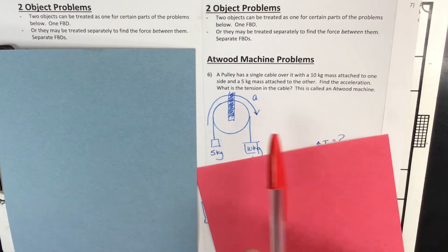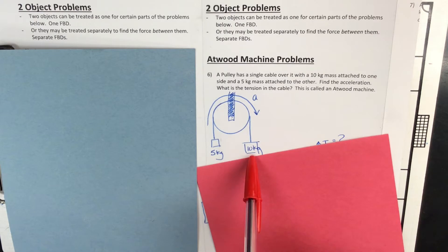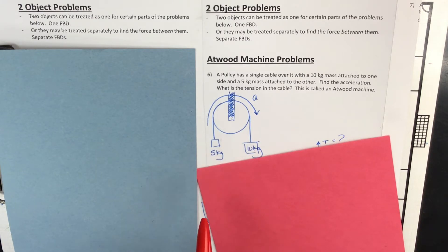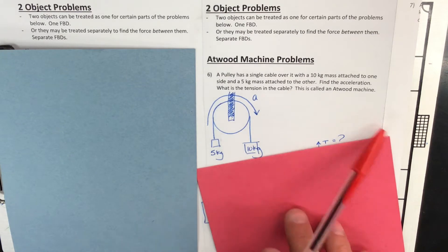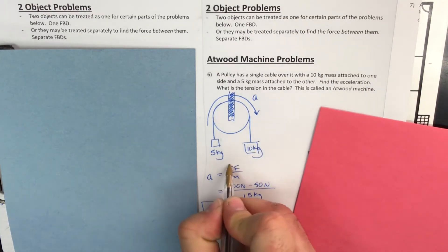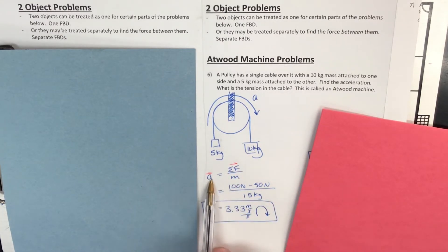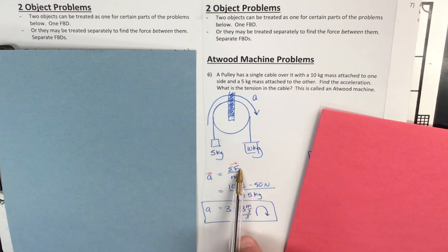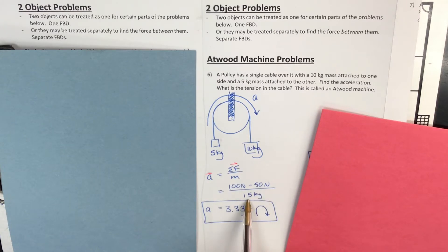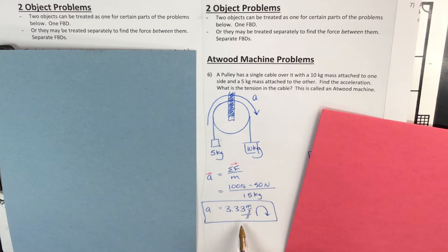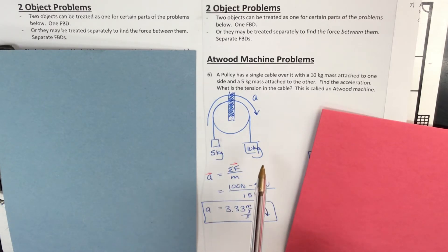We're going to use the whole system. What pulls this whole thing forward? The 100 newton weight. What pulls it backward? The 50 newton weight. Net force equals mass times acceleration — that equation is a vector equation. The direction of acceleration is positive, and your positive force will be in the same direction. 100 newtons forward, 50 newtons backward, 15 kilograms total. 100 minus 50 is 50 divided by 15 gives you 3.33 meters per second squared. The 5 kilogram accelerates up and the 10 kilogram accelerates down at 3.33 meters per second squared.